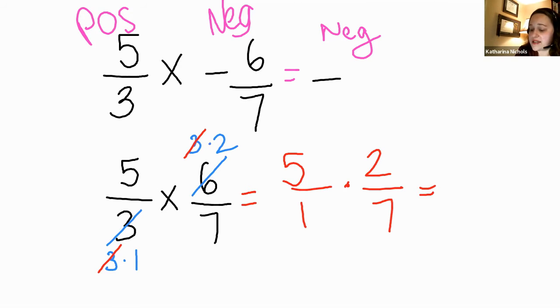And when I multiply straight across, I get five times two is ten over one times seven is seven. Therefore, my product is negative ten-sevenths.